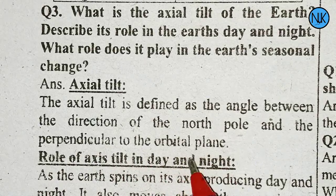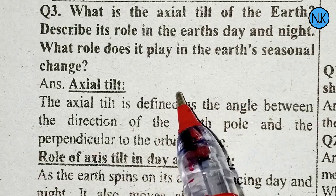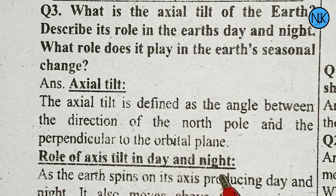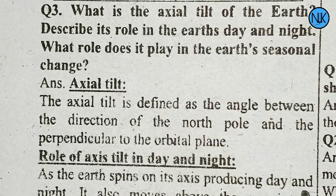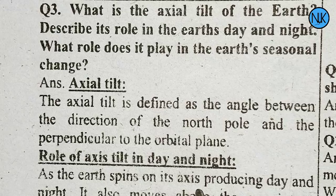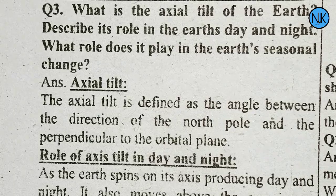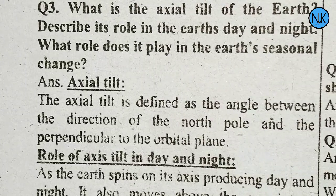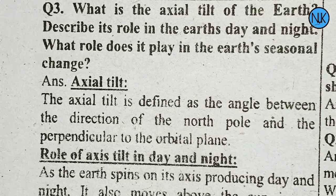The role of axial tilt in day and night: day and night occur because the Earth spins on its axis. The Earth also travels around the sun in an elliptical orbit, requiring about 365 days to complete.